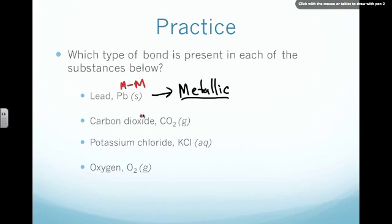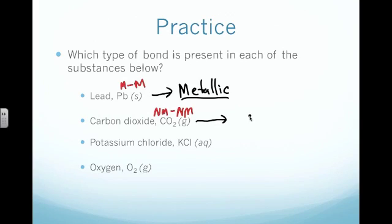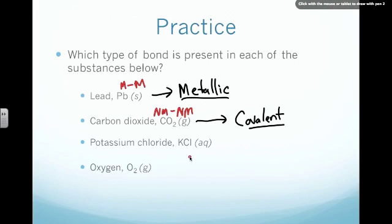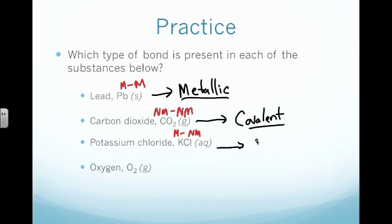Next is carbon dioxide. We want to identify whether we have metals or nonmetals. Carbon is on the right-hand side, so that's a nonmetal. Oxygen is also on the right-hand side of the staircase — another nonmetal. Any time we have two nonmetals connected, we combine and call them covalent. Third, potassium chloride: potassium, K, is all the way on the left-hand side in the first column, so that's a metal. Chlorine is all the way on the right-hand side, so that's a nonmetal. Any time I have a metal connected to a nonmetal, we call that an ionic compound.